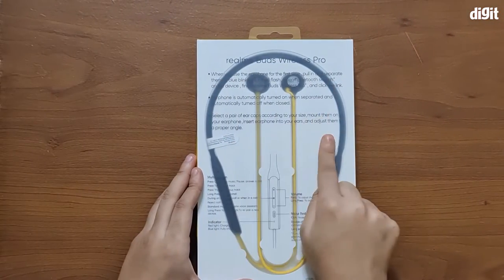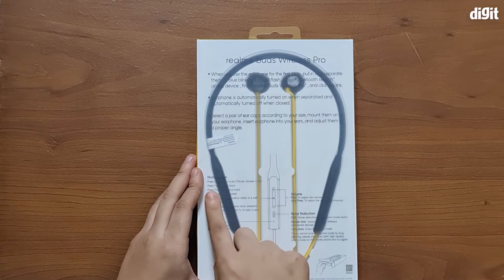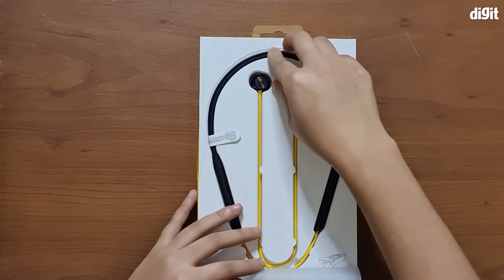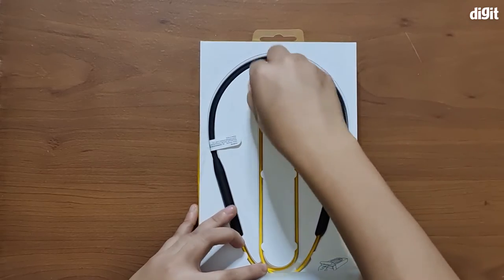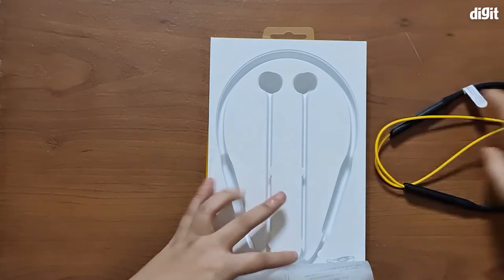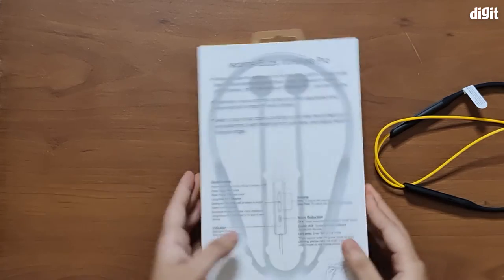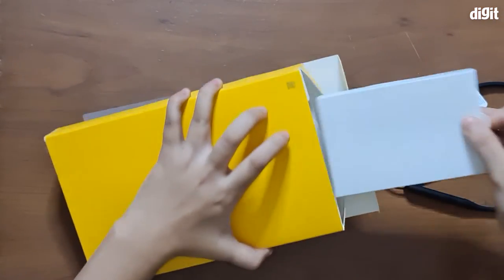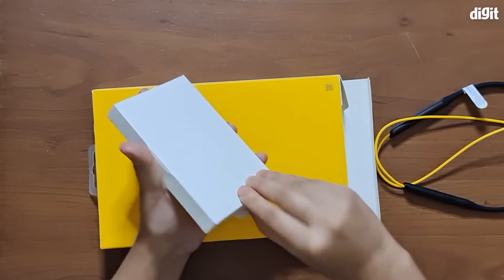We have some instructions right here, and you also have the functions of the buttons given right here. You can see that the earphones are nicely slotted into their position. We're going to set them aside. You also have a few accessories down here in this little slot.